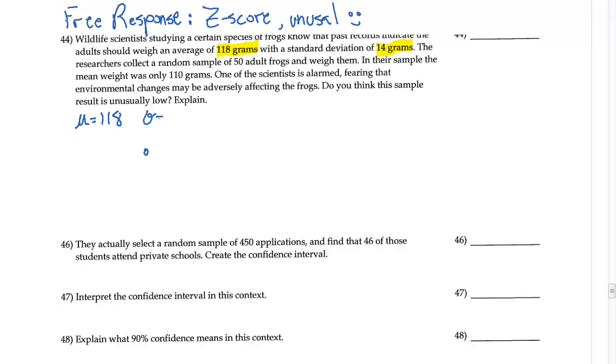The researchers collect a random sample of 50 adult frogs. The random is going to be important for our assumptions. In their sample, the mean weight was only 110 grams, so our x-bar, our measured mean weight, is going to be 110 grams.